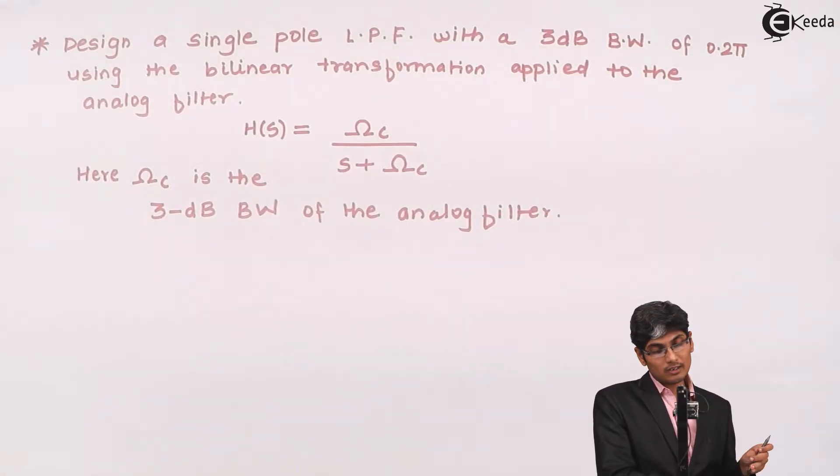The problem given to us today is: design a single pole low pass filter with a 3dB bandwidth of 0.2π using the bilinear transformation applied to the analog filter H(s) = Ωc/(s + Ωc), where Ωc is the 3dB bandwidth of the analog filter.